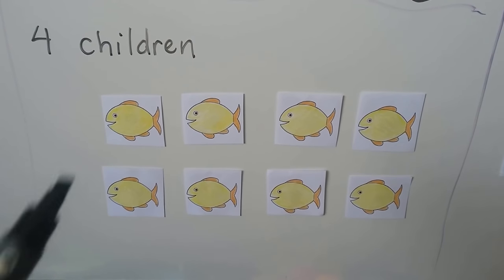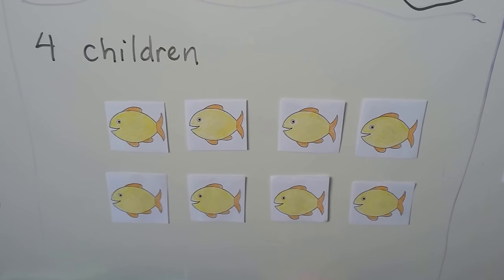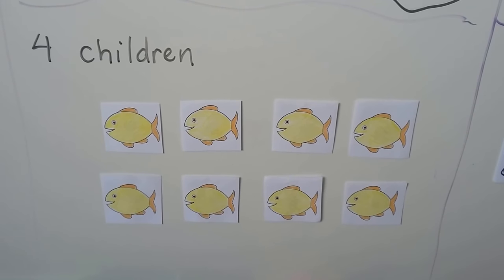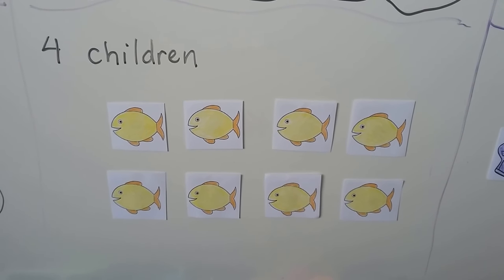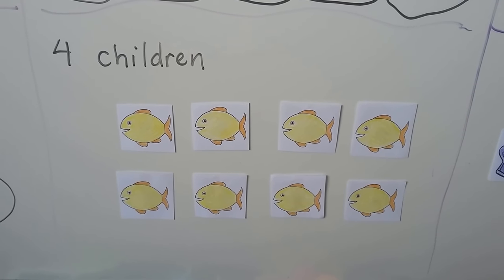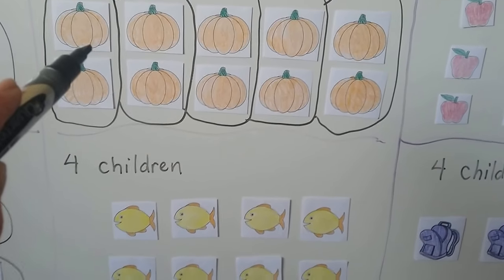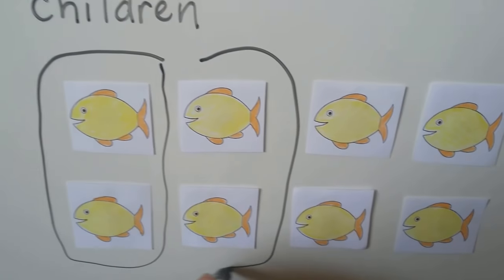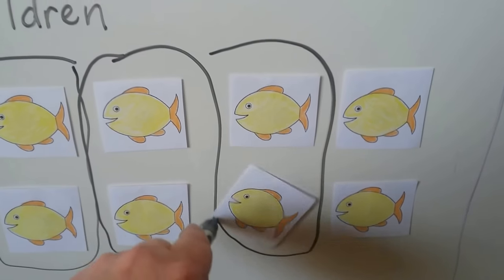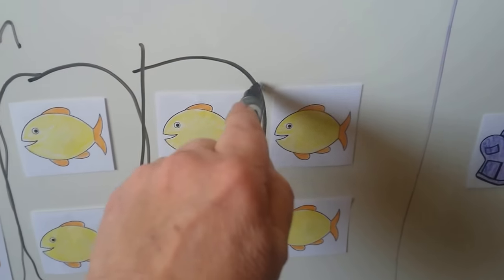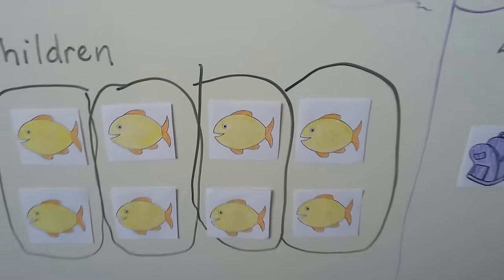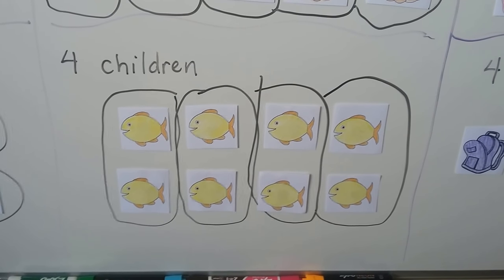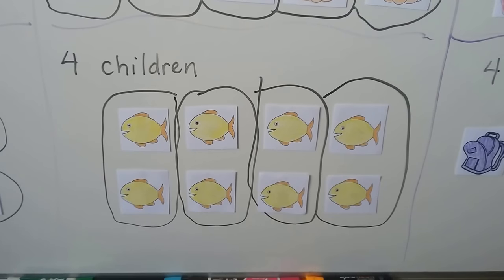Now there are four children and we have one, two, three, four, five, six, seven, eight fish. We need to circle each child's fair share. We can make four groups, one for each child. Now we have four groups — one, two, three, four. We have four children, so they'll each get a group. They'll each get one group of the four — they'll each get one-fourth.